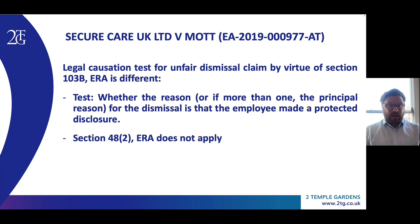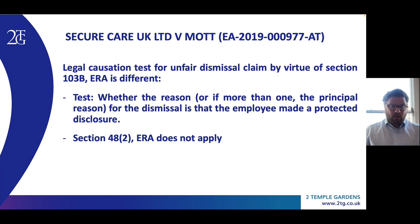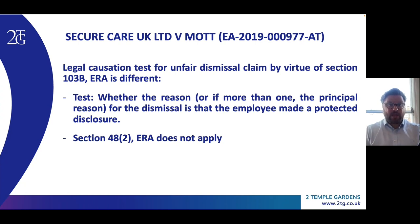In short, a section 103B claim requires — consistent with the wording of the statute — the claimant to establish that the reason, or if more than one, the principal reason for the dismissal is that the claimant had made a protected disclosure. This is a more stringent causation test than the section 47B test, which only requires the detrimental treatment to have been materially influenced by the protected disclosure. Moreover, claims under section 103B do not have the benefit of section 48(2), which places the burden of proof more in favour of the claimant. Secure Care UK Limited serves as a reminder, therefore, that close attention must be paid to the correct legal causation test. If a claimant brings claims — as is often the case — under both section 47B and 103B, two different tests for causation must be applied, considered, and satisfied.